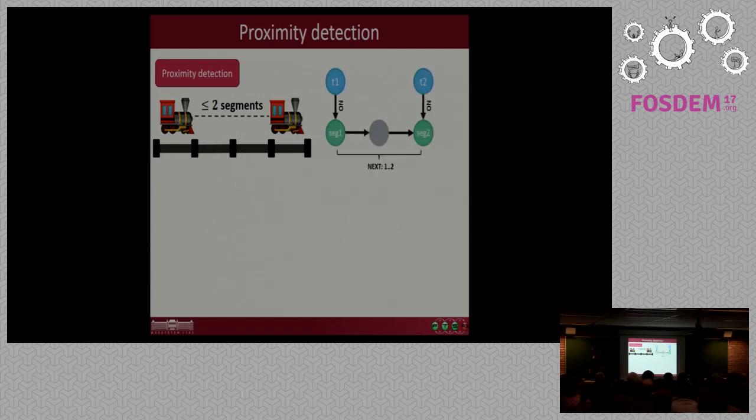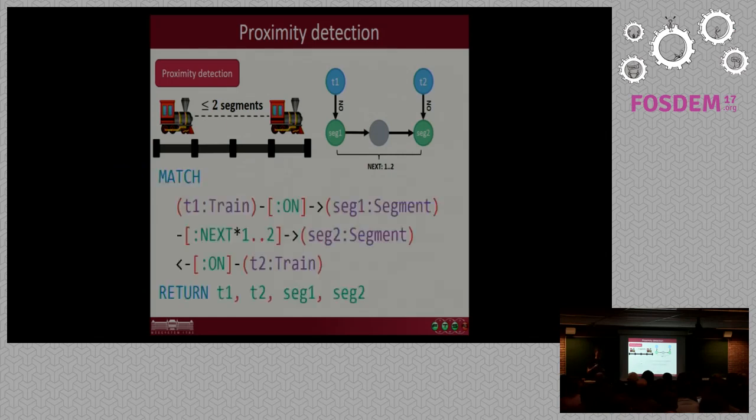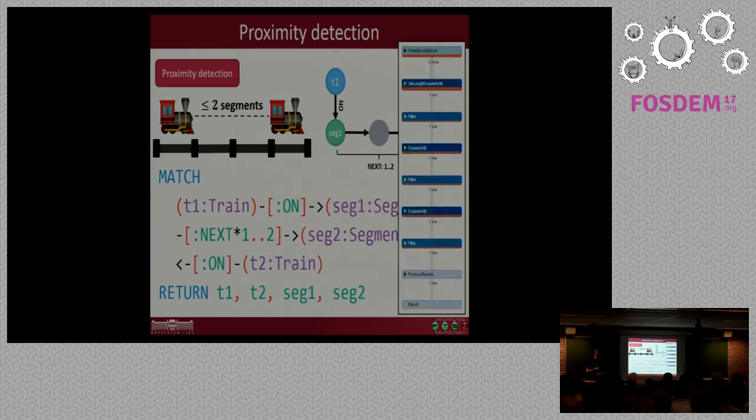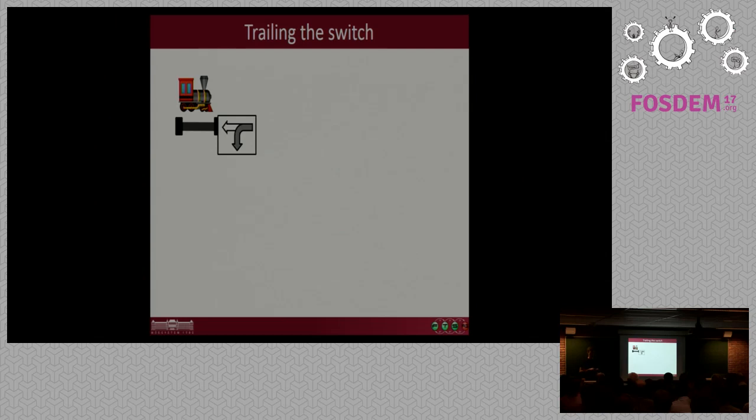So if you want to do the proximity detection constraint, we say that if the trains are on adjacent segments or they have less than two segments between them, then we might issue a warning. So as a graph pattern this might look like this. We have a train, a segment, and then there is a single segment or two segments between the segments that the trains are on. This is pretty much a simple Cypher query. You can just take the graph pattern and describe it in the usual Cypher syntax. If you run it in Neo4j it generates a query plan like this and it executes and returns the values.